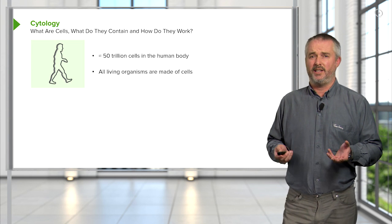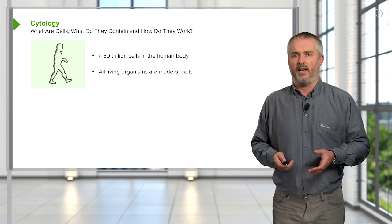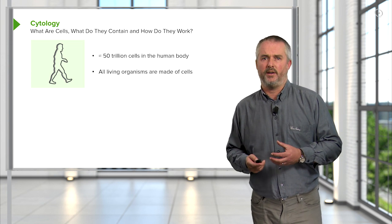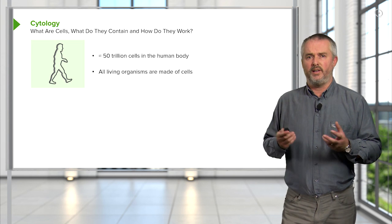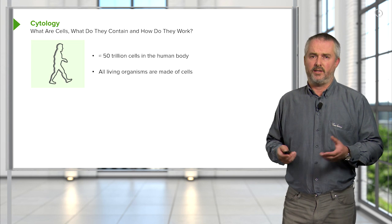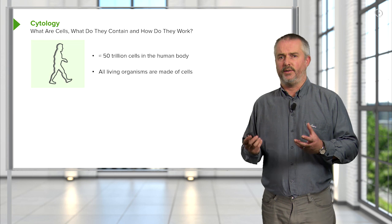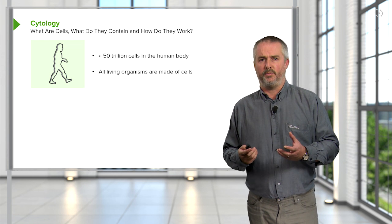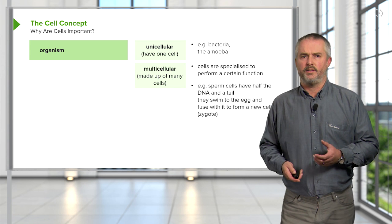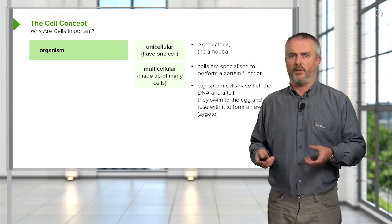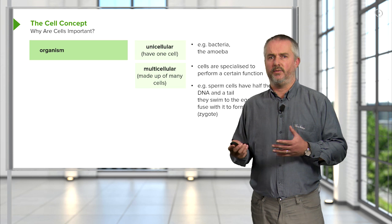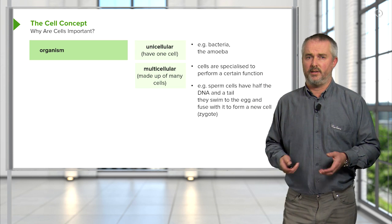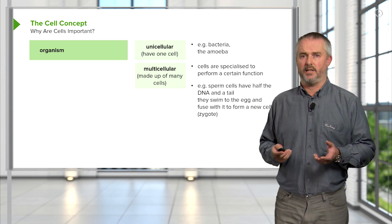There are 50 trillion cells within the human body and those cells are all specialized for some kind of function. All living things are made out of cells, and those cells are all specialized to do a certain job. An organism is made of organs, those organs are made of tissues, and those tissues are made out of cells of a particular kind.